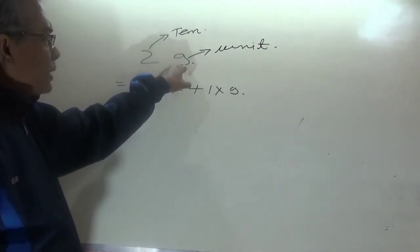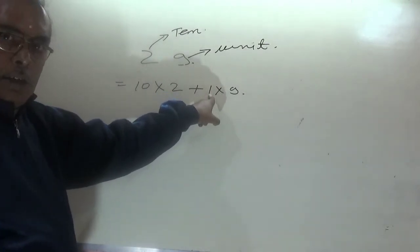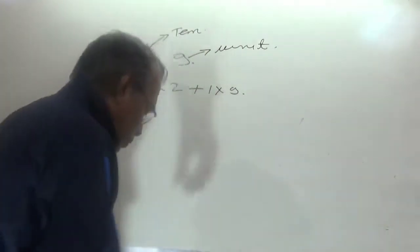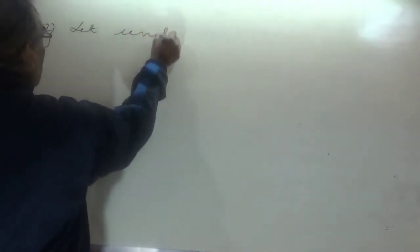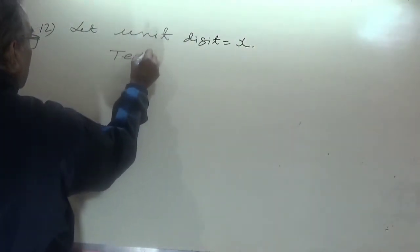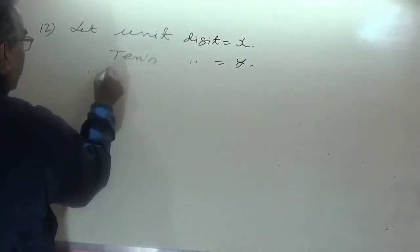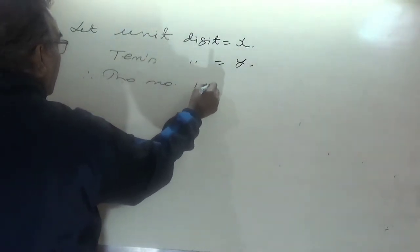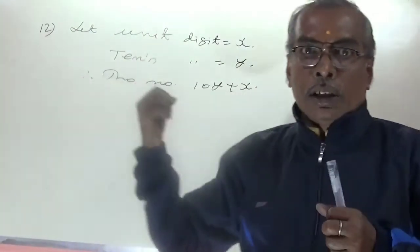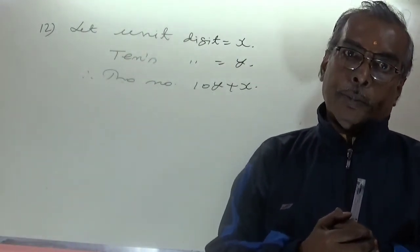When reversing digits, 29 becomes 92, which equals 10×9 + 2. So for any two-digit number, let unit digit = x and tenth digit = y, therefore the number = 10y + x. These three lines must be written compulsorily when solving any two-digit number question.